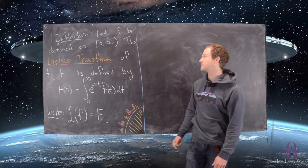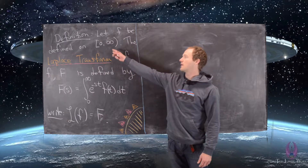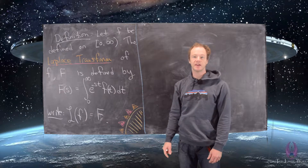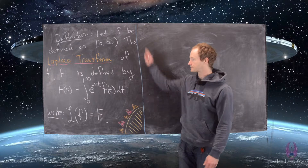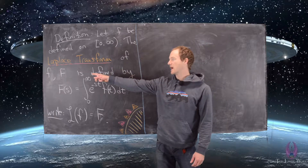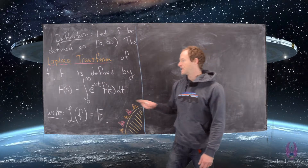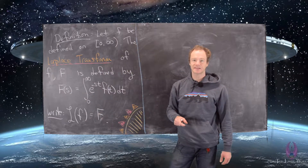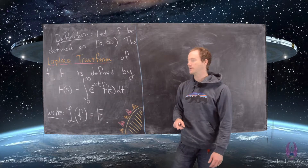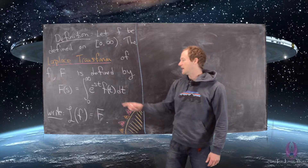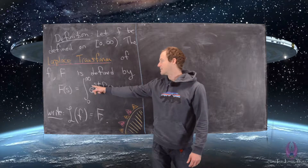Here's the definition. We let the function little f be defined on the interval zero to infinity, so for all values of the input bigger than or equal to zero. The Laplace transform of little f, which we call capital F, is defined by the following formula. We have capital F of s — s is the variable for the Laplace transform, in general sometimes p, but we'll be using s.